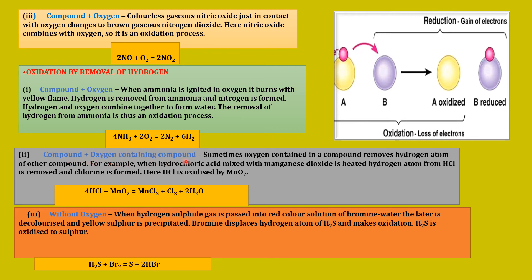Second type: compound plus oxygen-containing compound. Sometimes, oxygen contained in a compound removes hydrogen atoms from another compound. For example, when hydrochloric acid (HCl) is mixed with manganese dioxide (MnO₂) and heated, the hydrogen atom from HCl is removed and chlorine is formed. HCl is oxidized by MnO₂. The products are MnCl₂ (manganese chloride), Cl₂ (chlorine), and H₂O (water). Oxidation occurs from HCl to Cl₂ due to removal of the hydrogen atom.